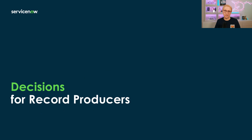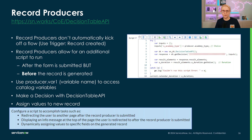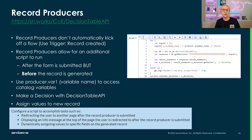After this brain twister, we'll slow back down a little. The last application space we're looking at for decisions in service catalog are record producers. Record producers are different from regular catalog items in that they don't create a requested item, but a record in the specified target table instead. This also means that we're not assigning a service catalog flow that automatically kicks off when the item is submitted. If we want further automation to happen, we need to create a flow with a record created trigger for this table.